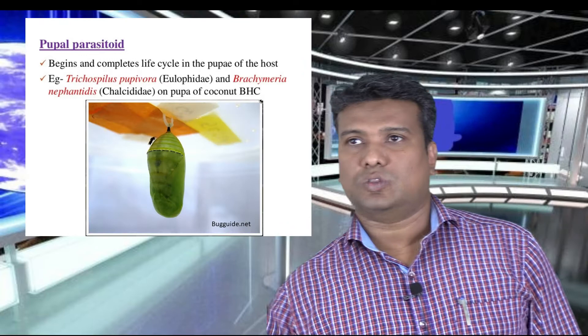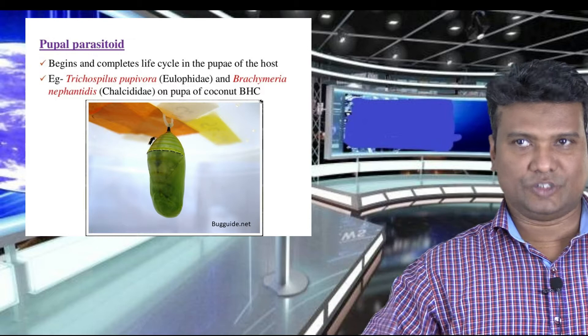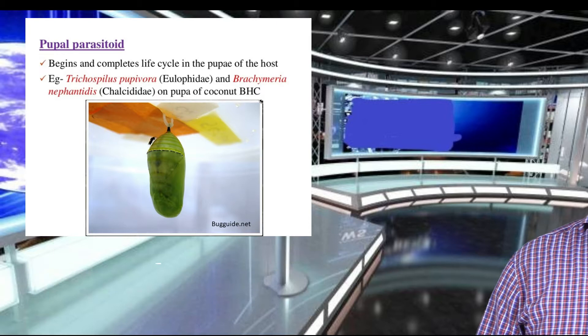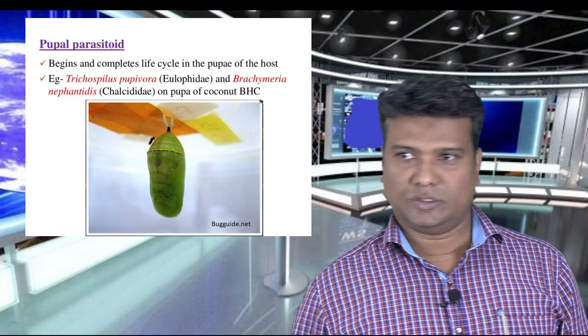Another type is the pupal parasitoid. Pupal parasitoids lay their eggs in the pupa of other insects and depend on the pupa for development — the life cycle begins and completes in the pupa. Examples are eulophids and chalcids, with specific examples being Trichospilus and Brachymeria.